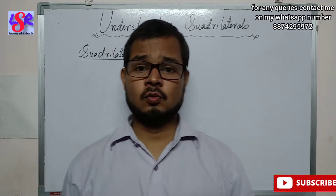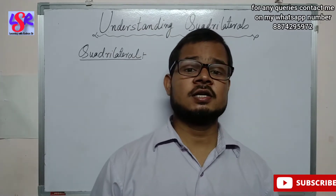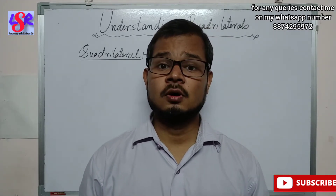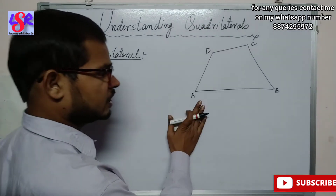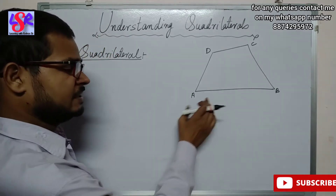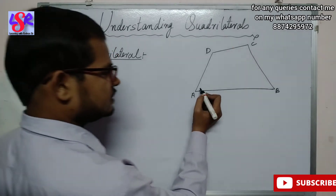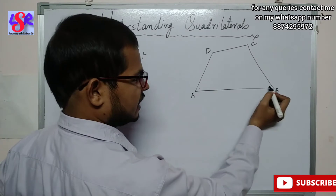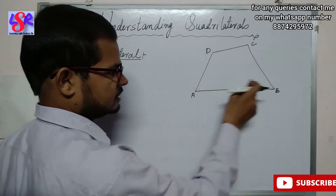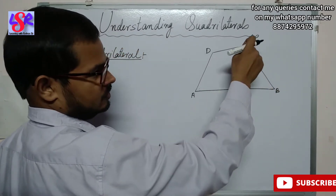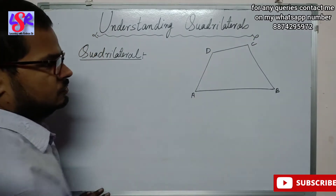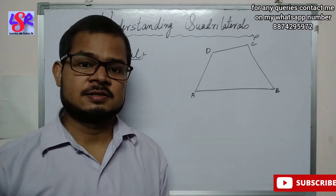First of all, what is a quadrilateral? A quadrilateral is a polygon of four sides, four line segments. We can consider a figure as a quadrilateral if it has four sides. The angles which are just beside each other are known as adjacent angles — we can take various pairs, and they are all adjacent angles.